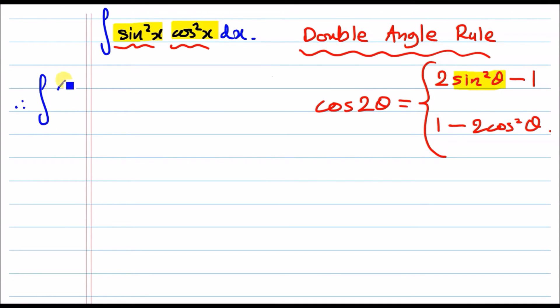You can rearrange to get 1 minus cos 2x over 2 for sine squared, whereas for cos squared x, you're going to get the plus version. Now, a key note is that sine squared x always has a negative cos 2x, whereas cos squared x has a positive cos 2x, as you can see.